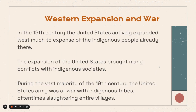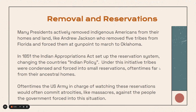In the 19th century, the United States began to actively expand west, much to the expense of the Indigenous people already there. The expansion brought many conflicts with Indigenous societies, and during the vast majority of the 19th century, the United States Army was at war with Indigenous tribes, oftentimes slaughtering entire villages. These conflicts are generally lumped together as the Indian Wars — a century-long effort of the American Army to kill and control these people. Many presidents actively removed Indigenous Americans from their homes and land. Andrew Jackson famously removed five tribes from Florida and forced them at gunpoint to march to Oklahoma. In 1851, the Indian Appropriations Act set up the reservation system, condensing tribes into small reservations often far from their ancestral homes. The U.S. Army was often in charge of watching these reservations and would commit atrocities, like massacres, against the people the government forced into this situation.